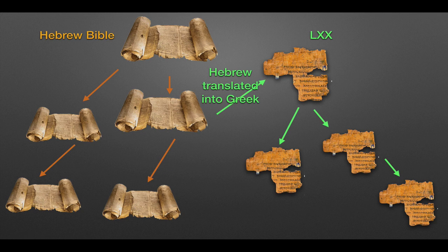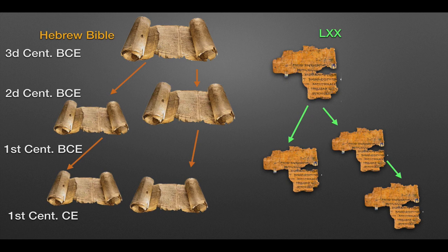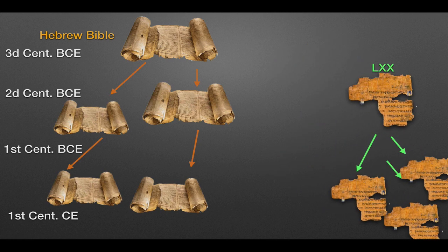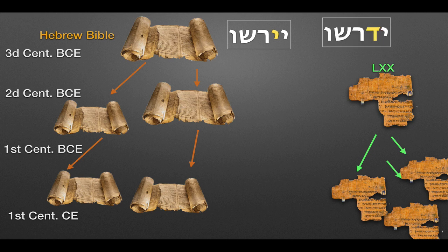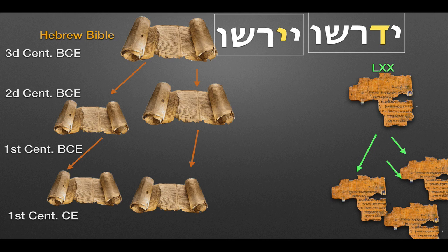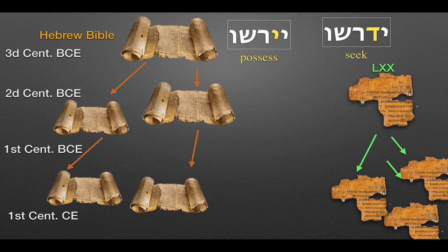We'll go back to the fact that Hebrew is written without vowels. Here are two Hebrew words. This is the verb Yershu — it means 'to possess.' And this is the verb Yidrashu — it means 'to pursue' or 'seek.' You can see that those two words look quite similar; they differ only in a single consonant, and the consonant is shaped quite similarly — all the more so in ancient Hebrew handwriting. So the word on the left means 'possess,' the word on the right means 'seek.'